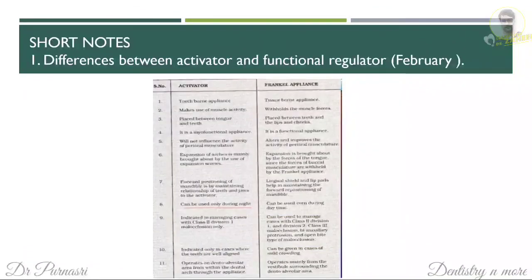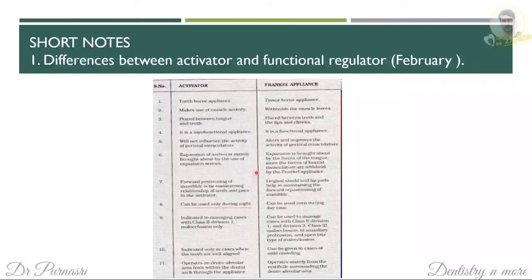Short note on differences between activator and functional regulator: the activator is a tooth-bone appliance and the Frankel is a tissue-bone appliance. The activator makes use of muscle activity whereas the Frankel withholds and prevents muscle forces. Activator expansion is brought about by expansion screws, whereas in the Frankel appliance, expansion is achieved through the forces of the tongue.